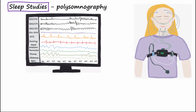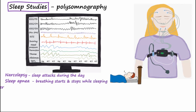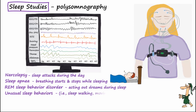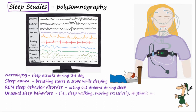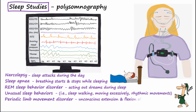Polysomnography monitors brain waves, blood oxygen levels, breathing, heart rate, and eye and leg movements. It is used to help diagnose narcolepsy, sleep apnea, and REM sleep behavior disorder. Polysomnography may also be performed for unusual behaviors during sleep, for a condition called periodic limb movement disorder, and for unexplained chronic insomnia, where an individual has trouble staying or falling asleep.